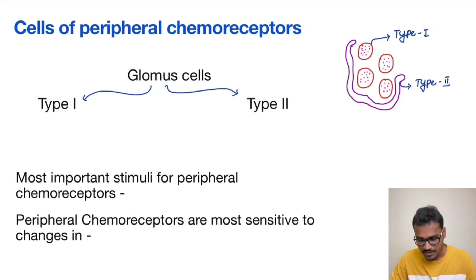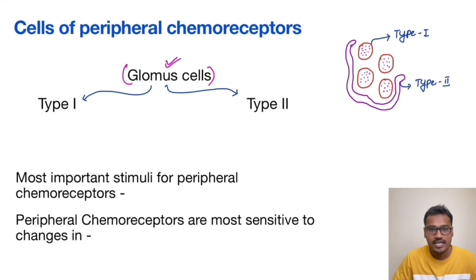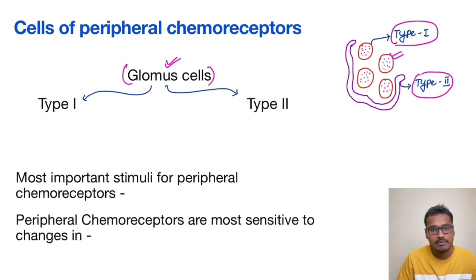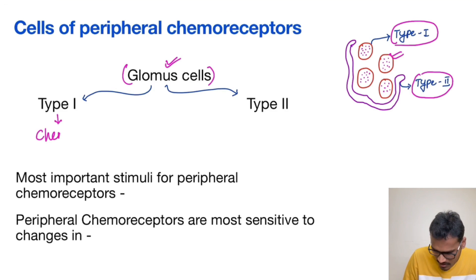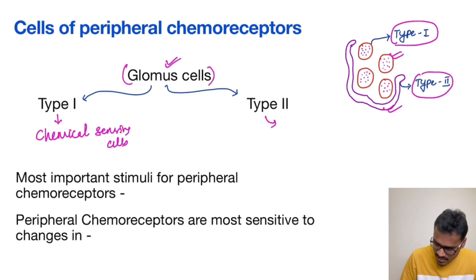Coming to the cells in the peripheral chemoreceptors — they are called glomus cells, and there are two types: type 1 and type 2. Type 1 cells are the chemical sensing cells, and type 2 cells are supporting cells that just support the type 1 cells.